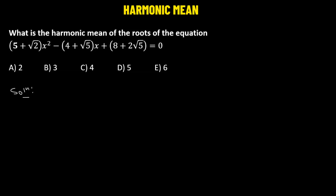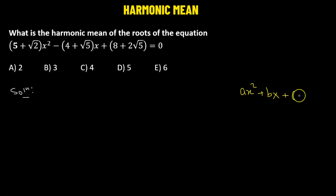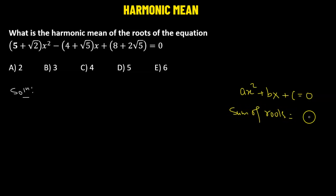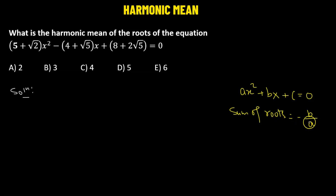Let's say we have a quadratic equation — the general equation given by ax² + bx + c = 0. Then the sum of roots: we take the coefficient of x and divide it by the coefficient of x², and take the negative value. So the sum of roots is defined as negative b over a.